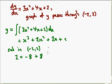And 2 lots of minus 2 is minus 4 plus c. So we have 2 is equal to minus 4 plus c.